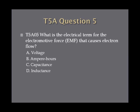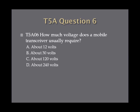Question 5: What is the electrical term for the electromotive force, EMF, that causes electron flow? A, voltage; B, ampere hours; C, capacitance; or D, inductance. Question 6: How much voltage does a mobile transceiver usually require? A, about 12 volts; B, about 30 volts; C, about 120 volts; or D, about 240 volts.